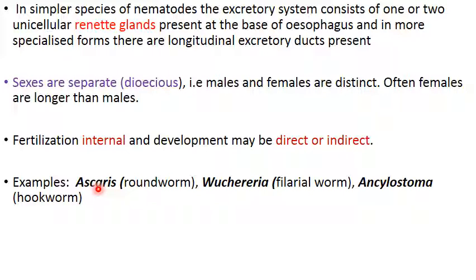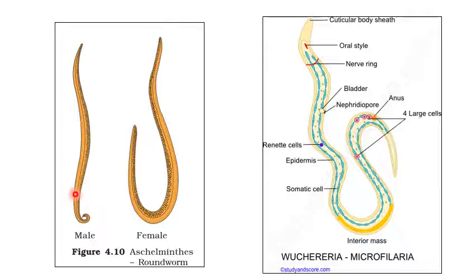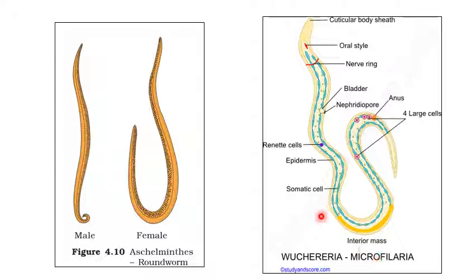Sexes are separate in nematodes — they are dioecious — and females are often longer than males, as seen in Ascaris. Fertilization is internal; development may be direct or indirect. Examples in the NCRT book: Ascaris (roundworm), Wuchereria (the filarial worm causing elephantiasis — swollen legs — as it resides in lymph vessels; its microfilariae larvae come out in blood at night so insects can transmit them to other persons), and Ankylostoma (hookworm).